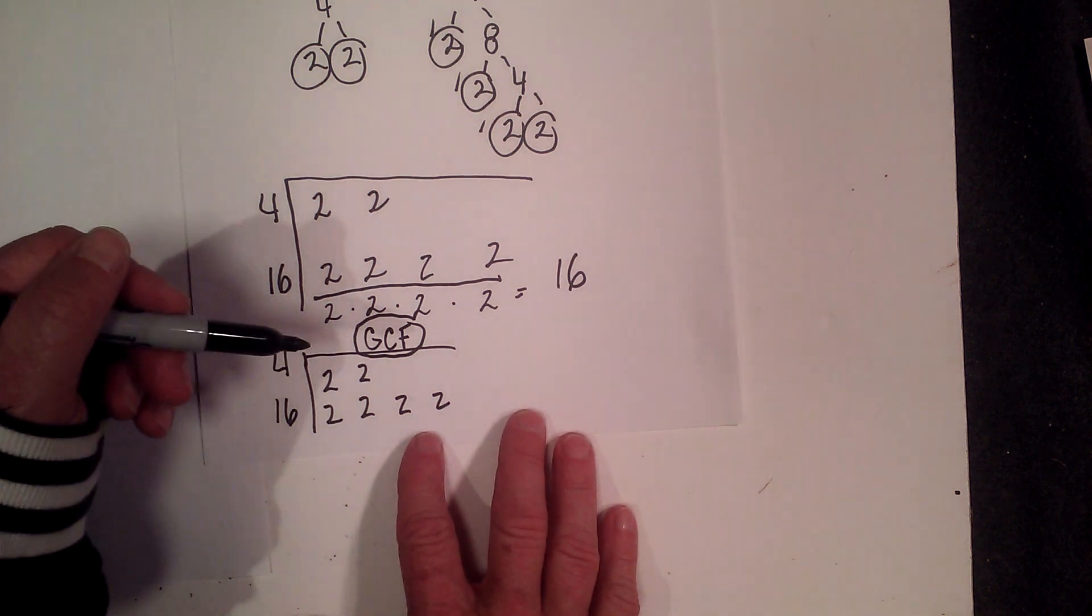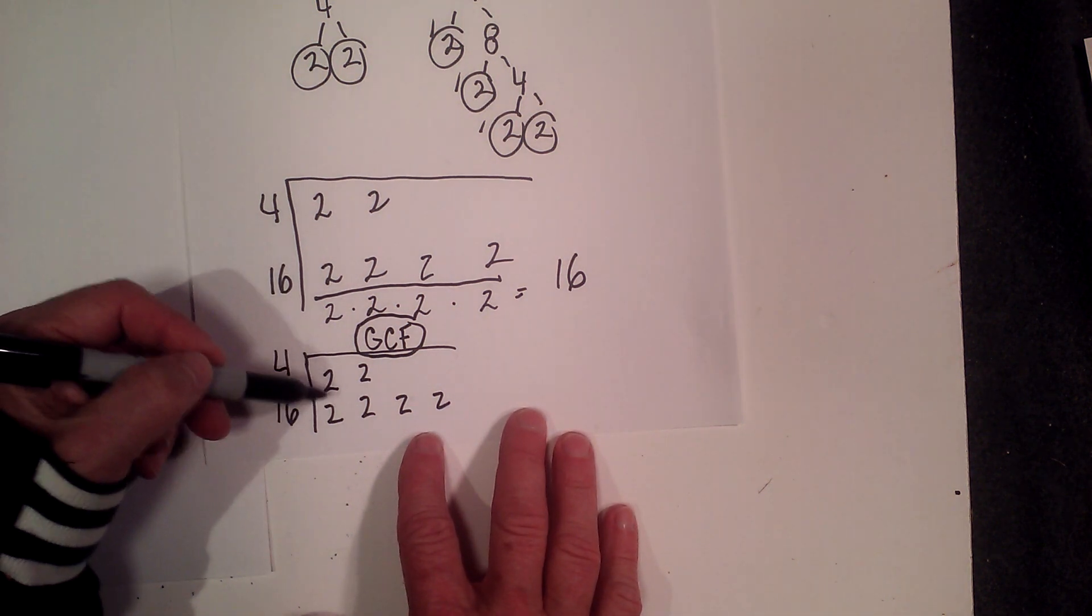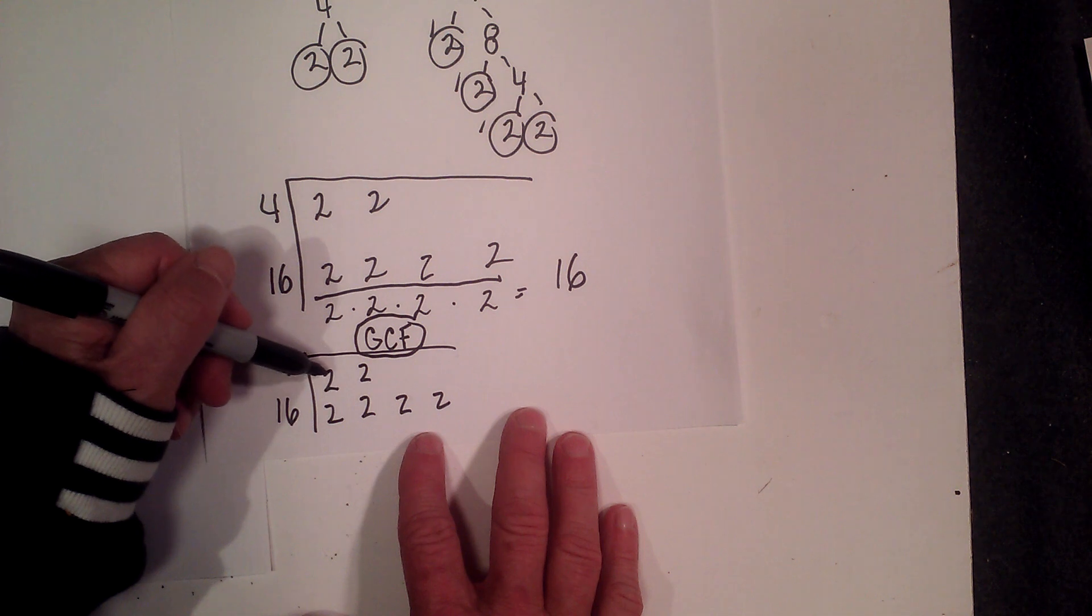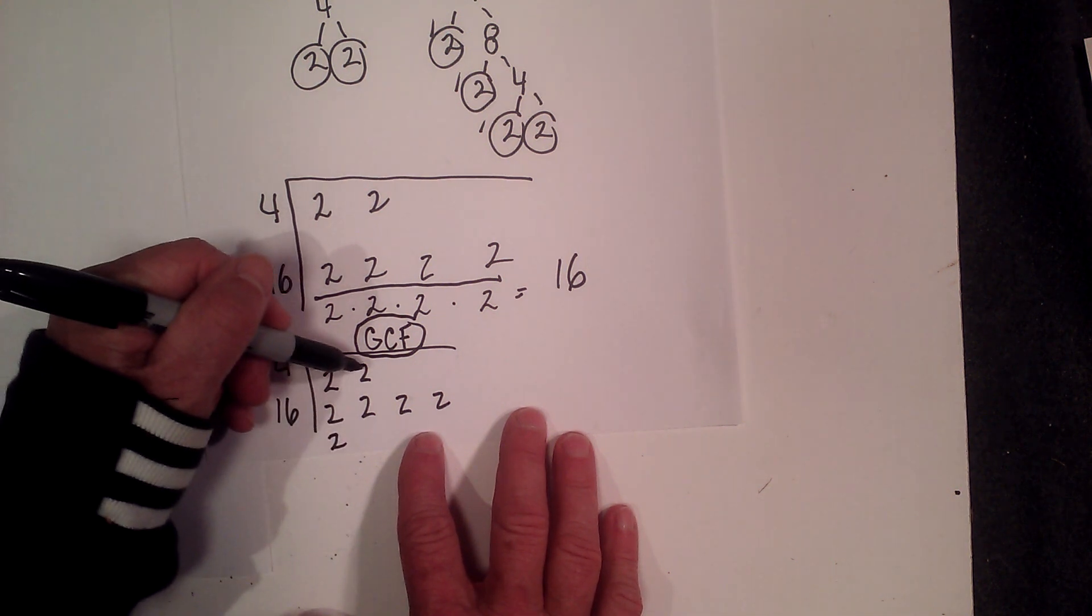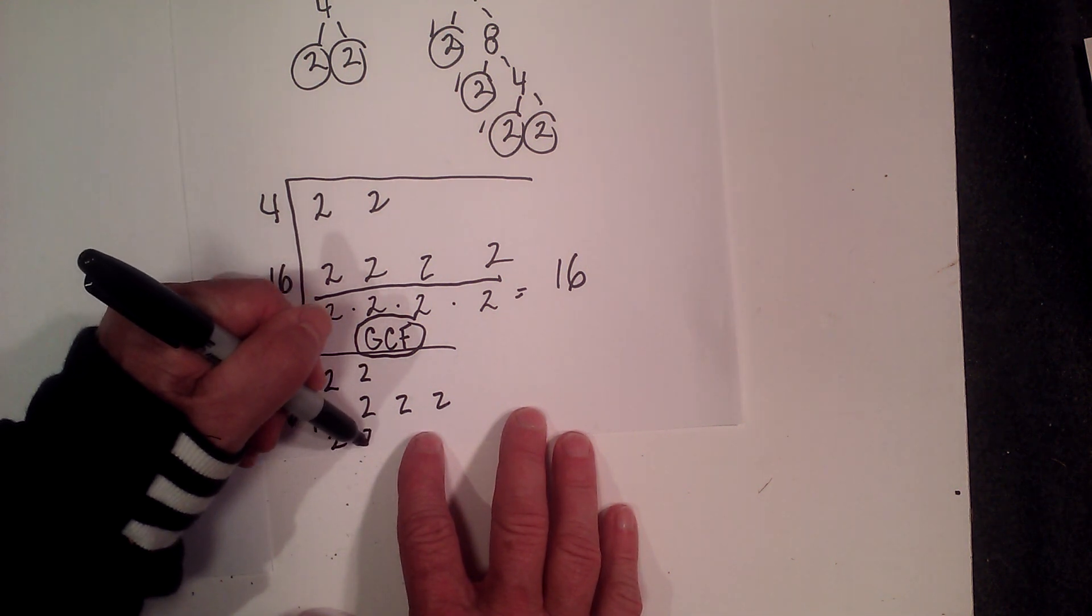You can do the very same thing, except this time with vertical pairs, you can only use vertical pairs. So I have a vertical pair here, so I'll use a 2, a vertical pair here, 2.